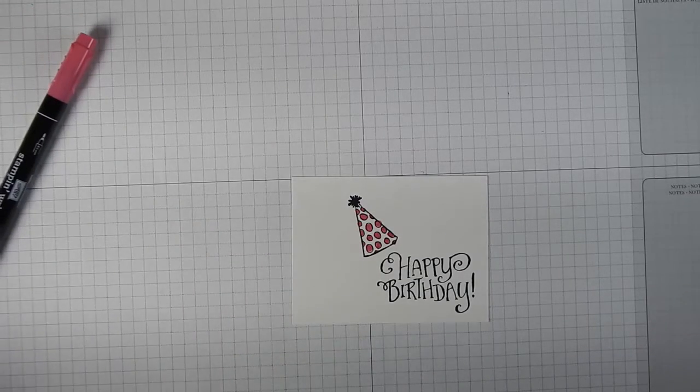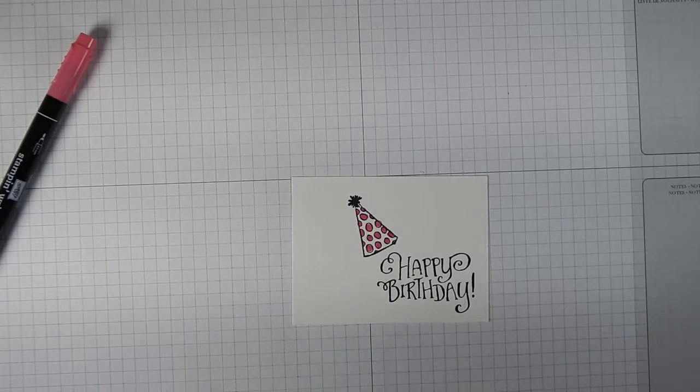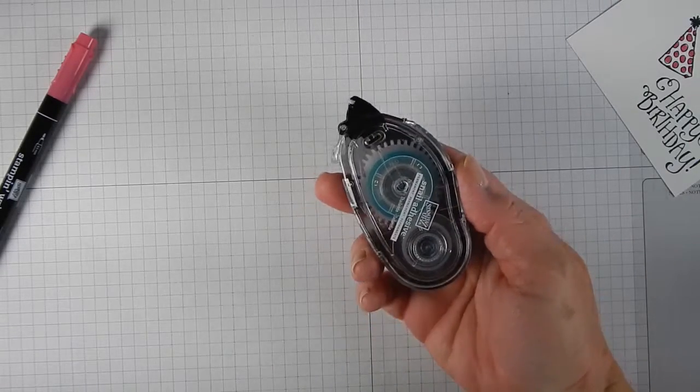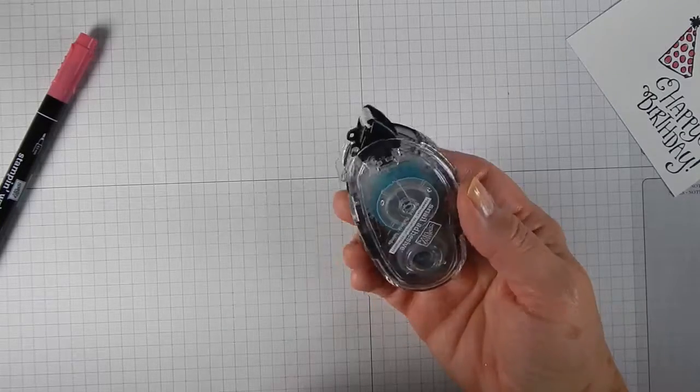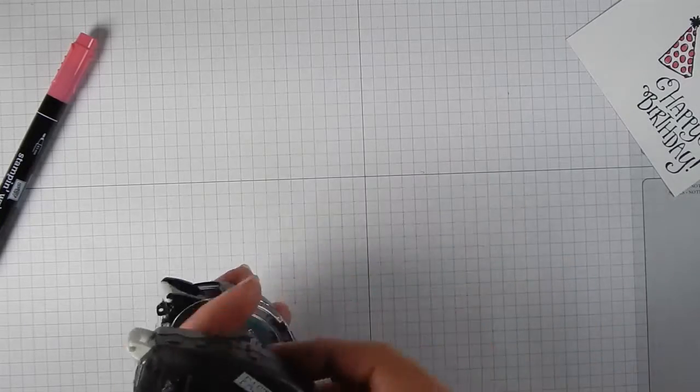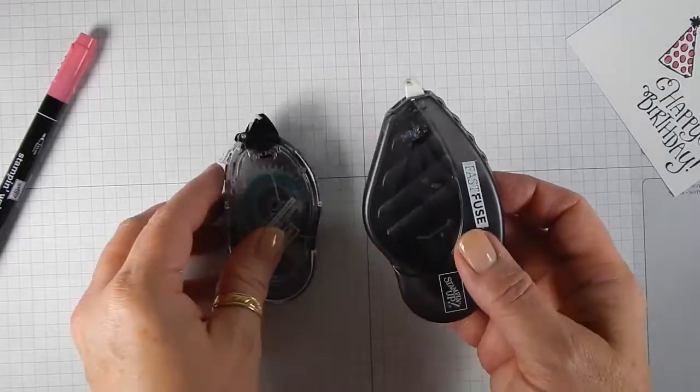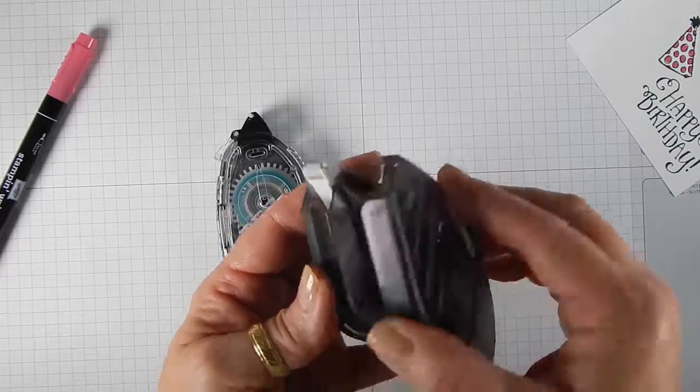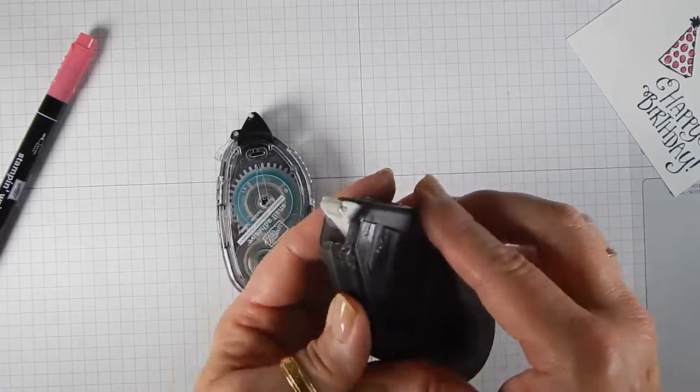Now, there's two different types of adhesive that Stampin' Up sells for the runners. There is a snail. This has got a lighter adhesive to it. And then there's fast fuse. Both of these come as cartridges. So once you buy the main body, you'll just have to buy refills for it.